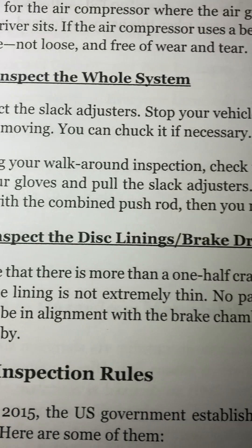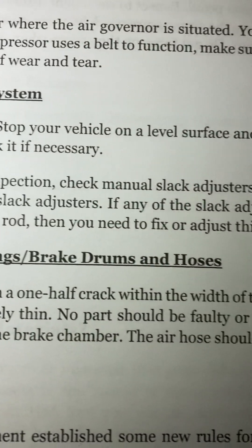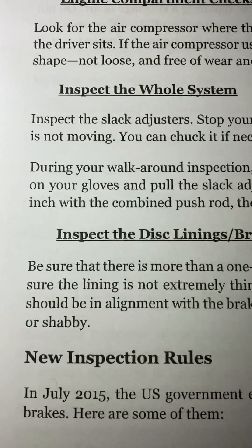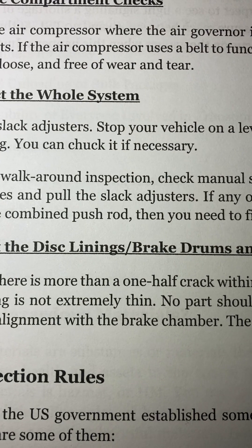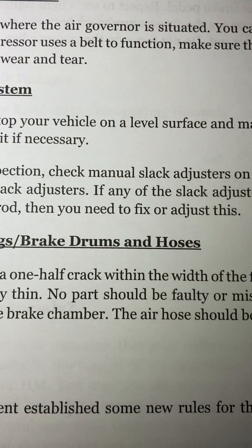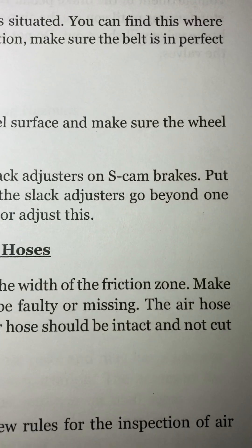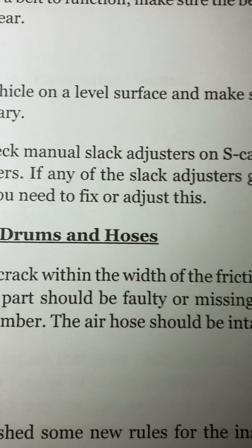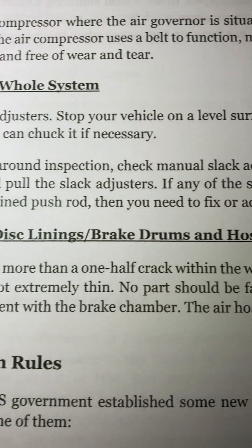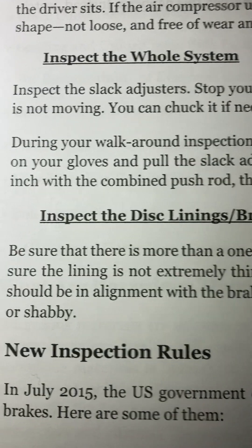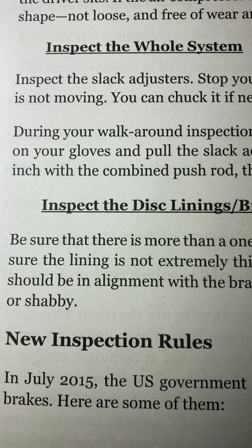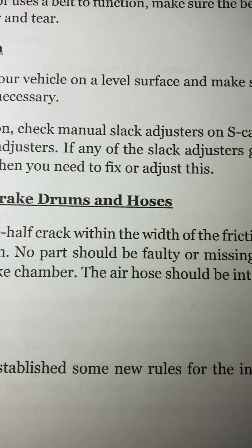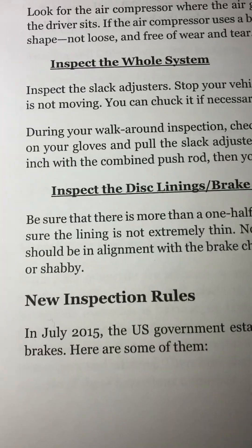Inspect the disc linings, brake drums, and hoses. Be sure that there is no more than a half-crack within the width of the friction zone. Make sure the lining is not extremely thin. No parts should be faulty or missing. The air hose should be in alignment with the brake chamber and should be intact, not cut or shabby. New inspection rules: in July 2015, the U.S. government established some new rules for the inspection of air brakes.